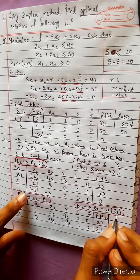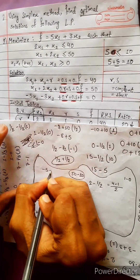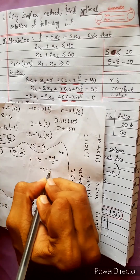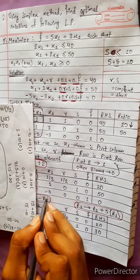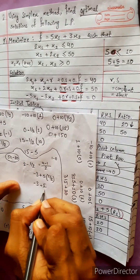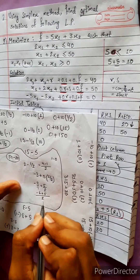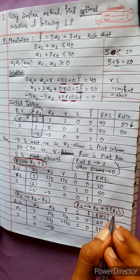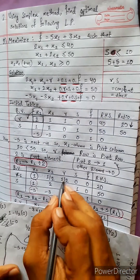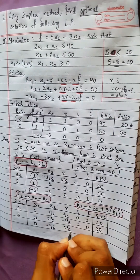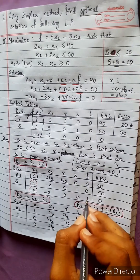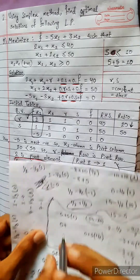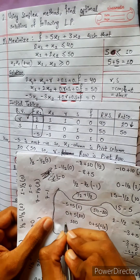R3 changes into R3 plus 5 times R1. R1 equals R1. R3 plus 5 times R1: 0 plus 5 times 1 by 2 equals 5 by 2; minus 3 plus 5 by 2 equals minus 6 plus 5 over 2, which is minus 1 by 2; then 0 plus 0 equals 0; 1 plus 0 equals 1; and 0 plus 5 times 20 equals 100.